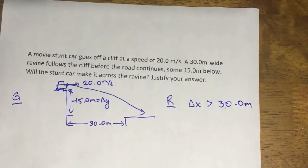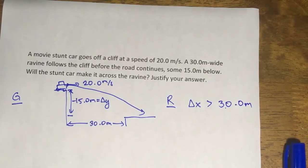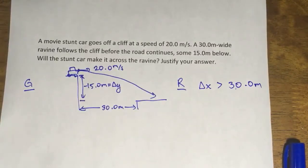whether delta x is greater than 30.0 meters. Why is it greater than? If it's equal to 30 meters, it will just hit the edge. It could still flop. It could still go down. Therefore, it has to exceed 30 meters.